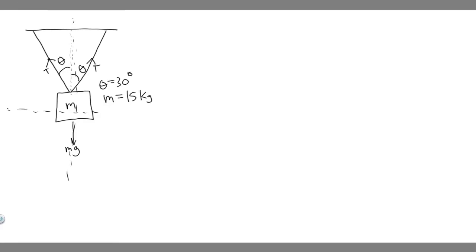In this problem, we're told two identical strings making an angle of theta equals 30 degrees with respect to the vertical support a block of mass m, which equals 15 kilograms, as shown in the figure. We're trying to find the tension in each of the strings.